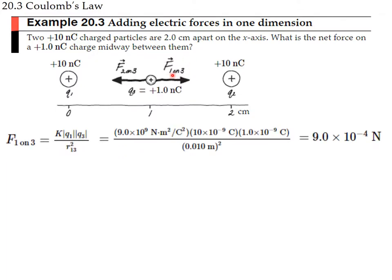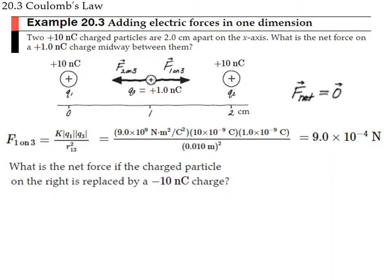Let's calculate it explicitly. F = K × (1 nC × 10 nC) / (0.01 m)² = 9×10⁻⁹ N, pointing to the right. The other force is exactly the opposite, pointing to the left, so the net force is zero.